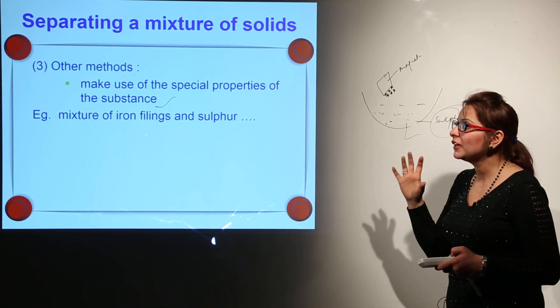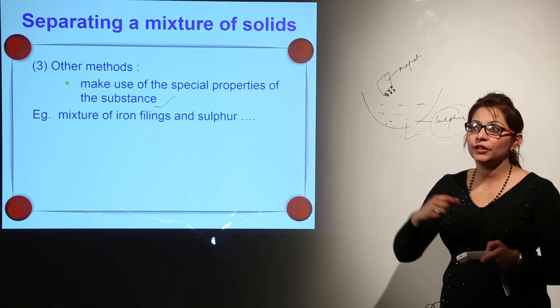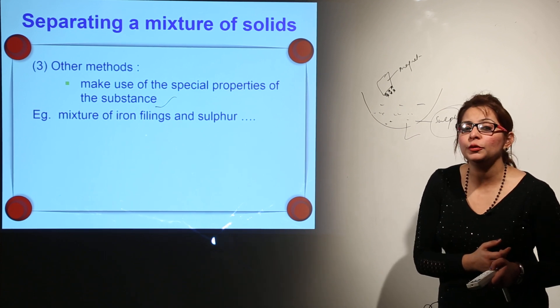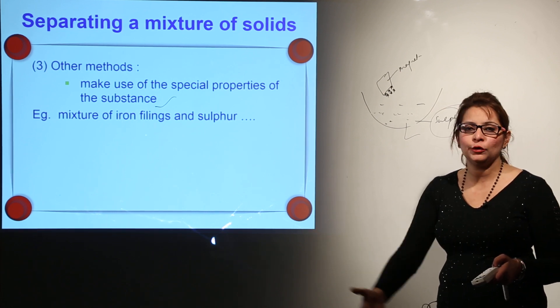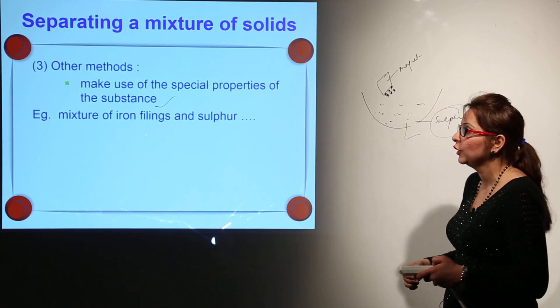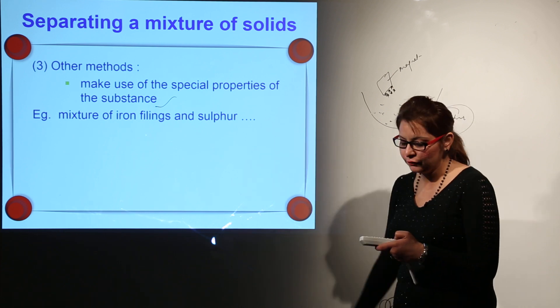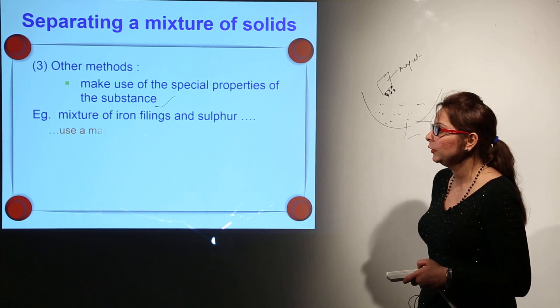This is how you can use any such property which is different - a property which is shown by one solid and not by the other. Similarly, we did it for the iron filings and the sulfur.